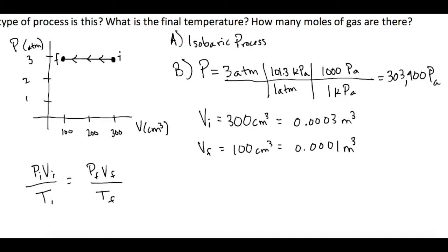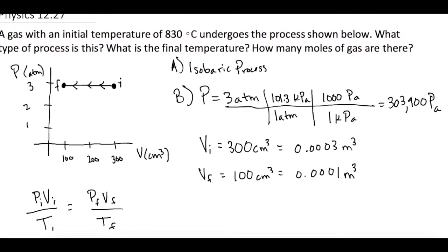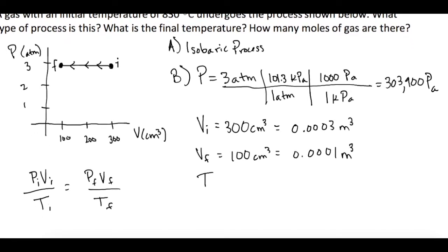So now we want this T final right here. And they tell us, I forgot to write it down, we start at T1 is 830 degrees Celsius. So if we add 273, that gives us 1103 Kelvin.